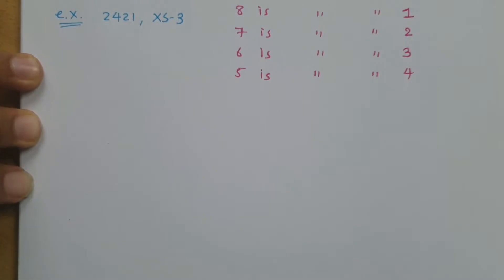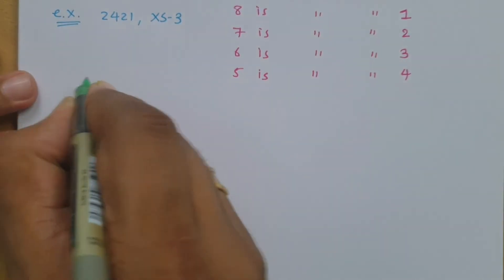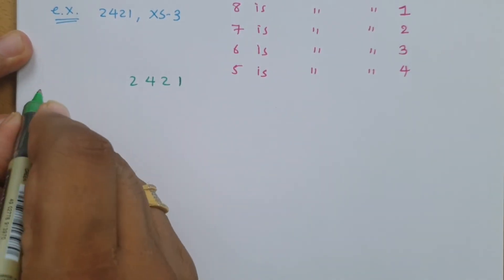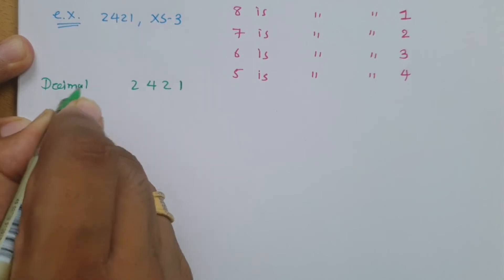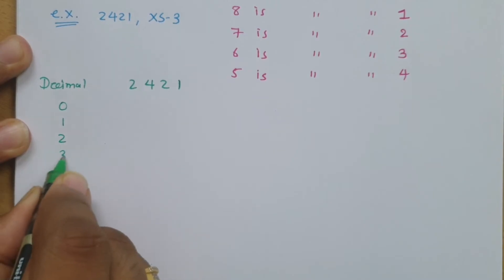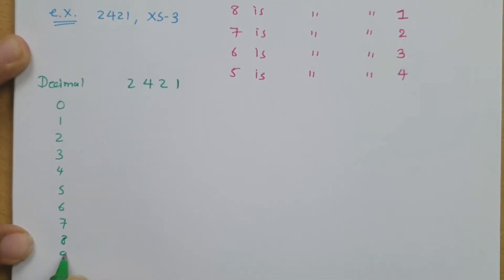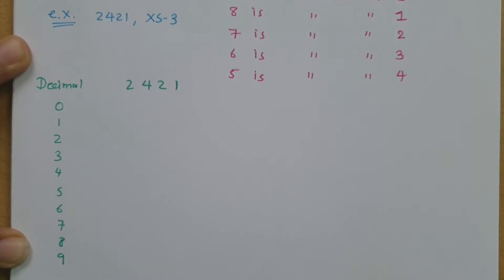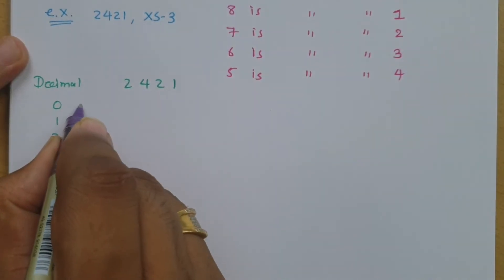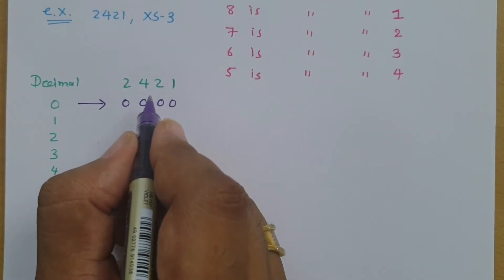Let me explain the 2421 code with an example. In the 2421 code, we have bits on one side and decimal values on the other, ranging from 0 to 9. In this code, decimal 0 is represented as 0000, and it is both a weightage code and a reflective code.